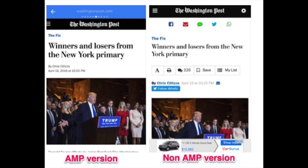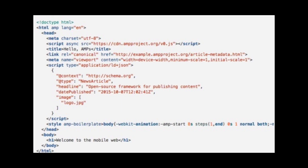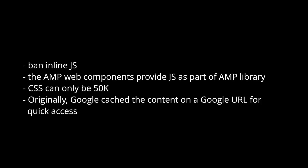AMP is so fast because it loads as an HTML page that is lightweight and stripped down. AMP simplifies typical HTML by requiring rules to be followed for AMP validation, including banning inline JS and CSS. The AMP web components provide JS as part of the AMP library, CSS can only be 50k, and originally Google cached the content on a Google URL for quick access.